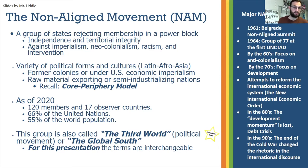NAM is still around today, and as of 2020 it has 120 members and 17 observer nations. It represents 66% of the countries in the United Nations and 55% of the world's population — and that doesn't include China as an official member. For the sake of this presentation, I'm going to use NAM, Third World, and Global South interchangeably.